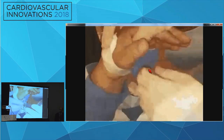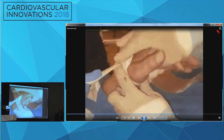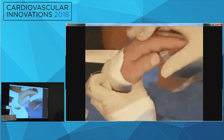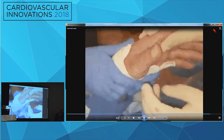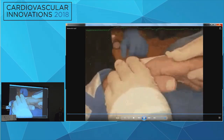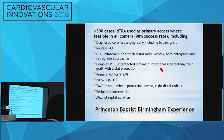The patient can use the right arm immediately after the procedure, and there is no restriction to the wrist of the left arm as well. With this setup, we have been using this distal radial access — particularly on the left side — for almost 300 cases as the primary access, including routine angiography and routine PCI.